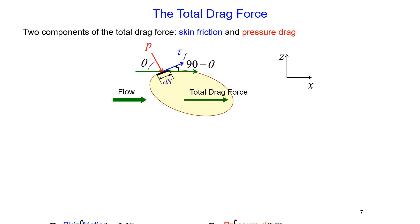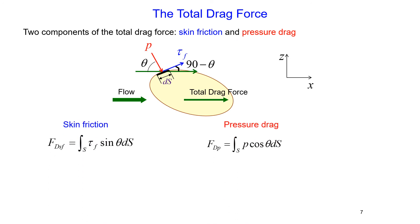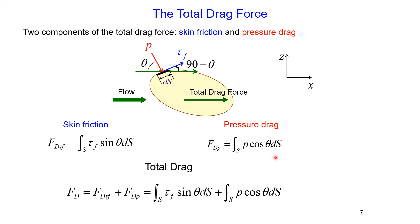To obtain the total drag force, now that we know the two components — skin friction and pressure drag — we simply add these two components together. Skin friction plus pressure drag gives us the total drag force acting on the body.